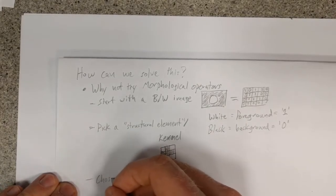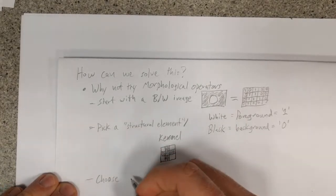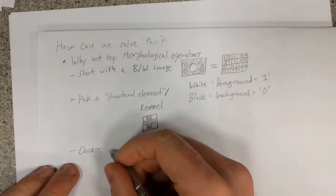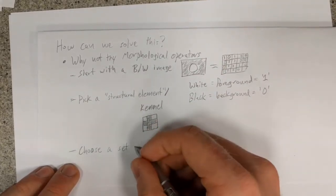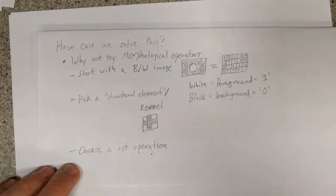Lastly, we define a set of operations that dictates the inclusion or removal of a pixel. This is done primarily through bitwise AND and bitwise OR operations.